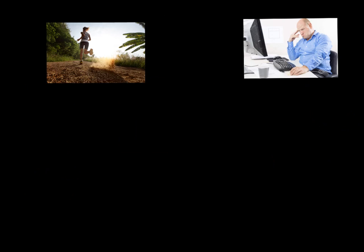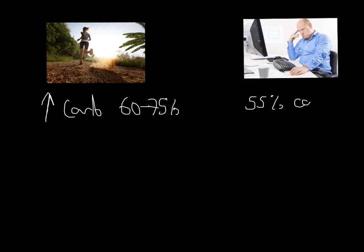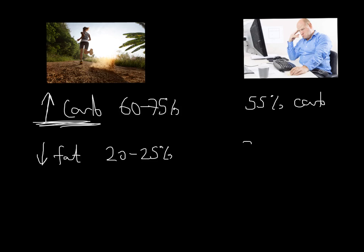The other question that could come up is looking at an athlete compared to an untrained person — someone who doesn't do much training. What are the key comparisons? The athlete is going to have a very high carb intake — you're talking 60% to 75% — whereas an untrained person is going to have about 55% carbohydrate intake every single day. As a result, the trained athlete is going to actually reduce their fat intake as a percentage, maybe only 20% to 25%, whereas a normal untrained person might consume 30% fats every day.